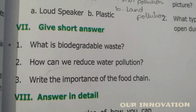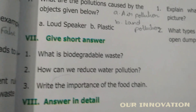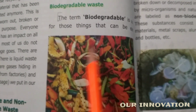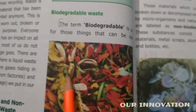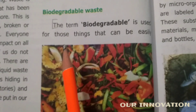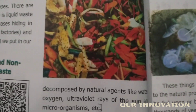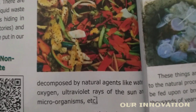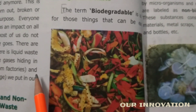Roman numeral seven — give short answers. What is biodegradable waste? From page number 54, under the heading 'Biodegradable Waste': the term biodegradable is used for those things that can be easily decomposed by natural agents like water, oxygen, ultraviolet rays of the sun, and microorganisms. This is called biodegradable waste.